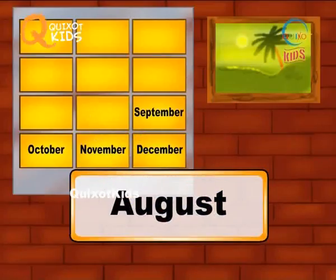August. After July comes August. It has 31 days.